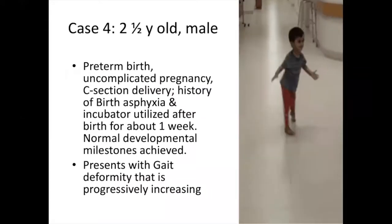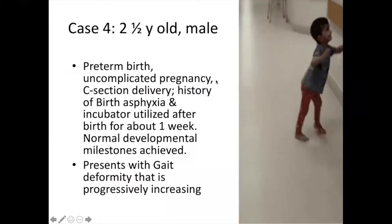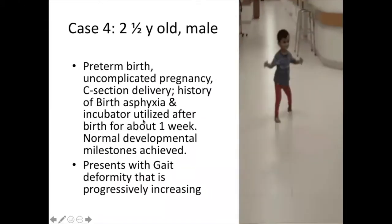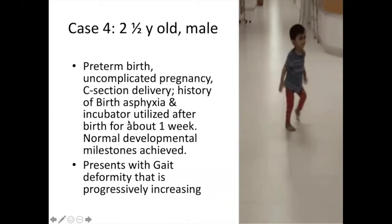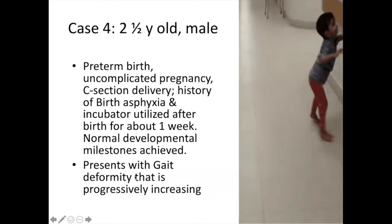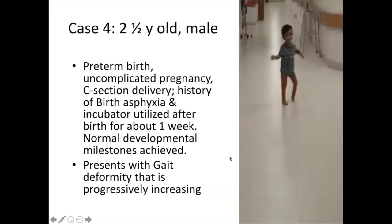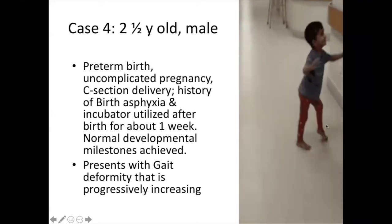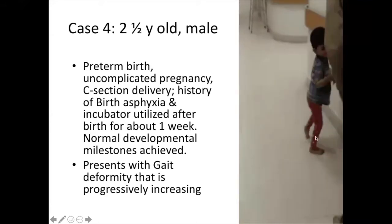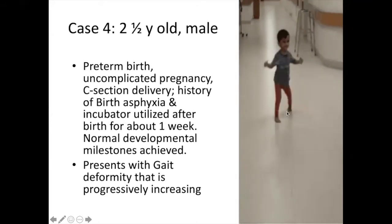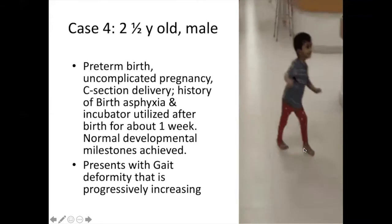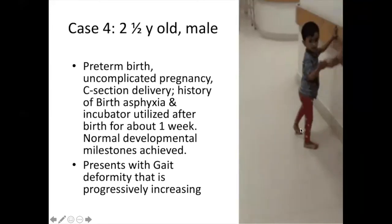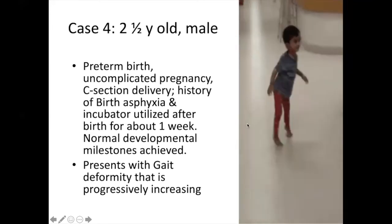Another child of four and a half years — preterm birth, C-section, intubated, presenting with a gait deformity that is progressively increasing. If you look at this, the knee is extending and there is a persistent equinus gait. Then this is the video we made in the room.